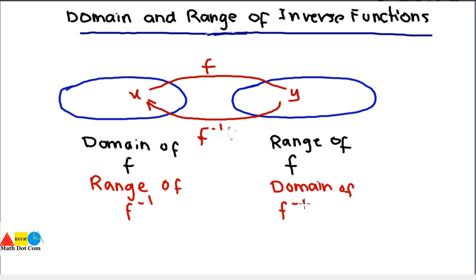It means if you have the domain and range of the given function, you can easily find the domain and range of the inverse function by changing their positions — the domain of f becomes the range of f-inverse, and the range of f becomes the domain of f-inverse. Keeping this concept in mind, let's work through an example.